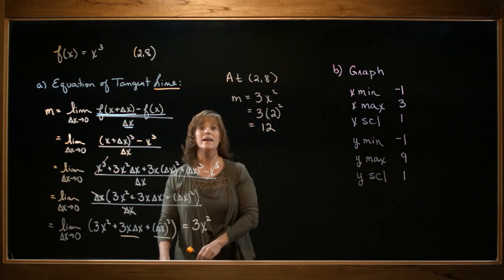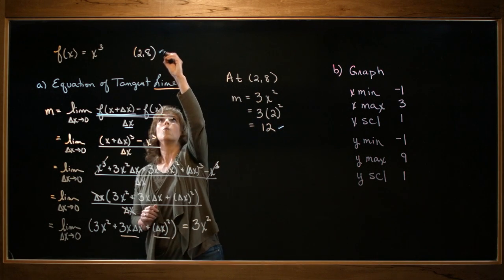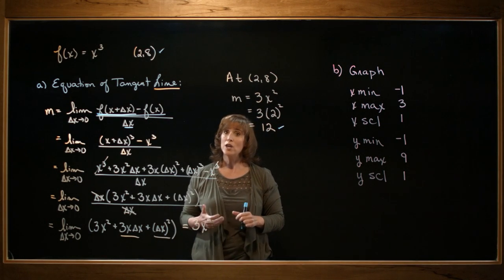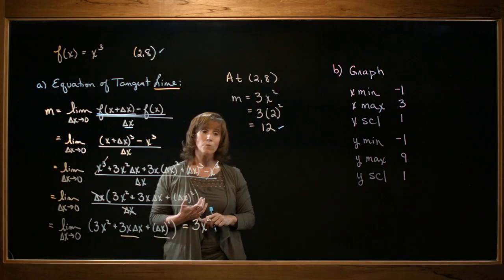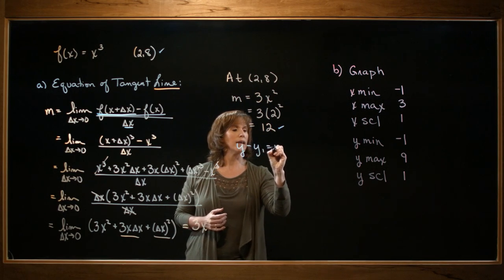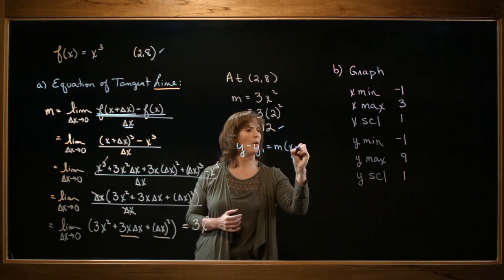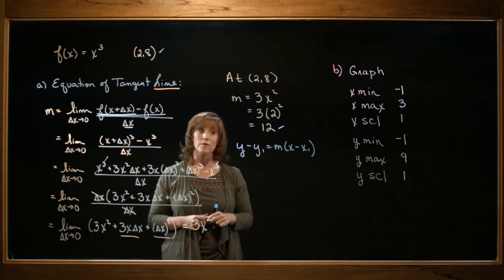Okay, now I have the slope of my tangent line and one point on my line, so I can go ahead and get the equation of the tangent line. I'm going to use the point-slope formula for that. So I have y minus y1 equals m times the quantity x minus x1. And I'll plug in the appropriate information.